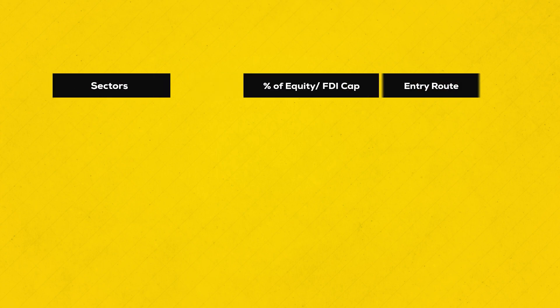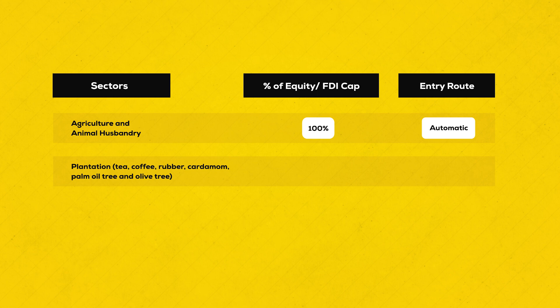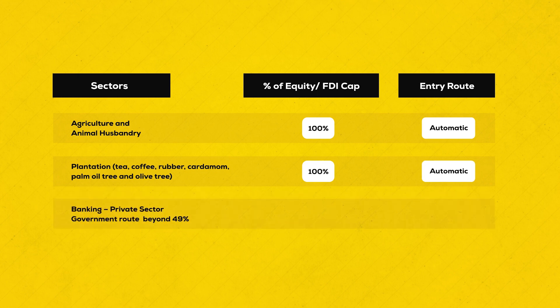Let's understand with a few examples of permitted sectors. The agriculture sector allows 100% FDI, and that too via the automatic route. Plantation of coffee and tea is also 100% FDI allowed, via the automatic route. Banking private sector allows 74% FDI — up to 49% via the automatic route, whereas if you are going beyond 49%, you have to go via the approval route and take government approval.